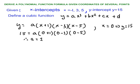All right. Now, deriving a polynomial function given coordinates of several points. In this case, really what that means is that we have x-intercepts and y-intercepts. When we have three x-intercepts, this would mean, for the most part, that this is a cubic polynomial.